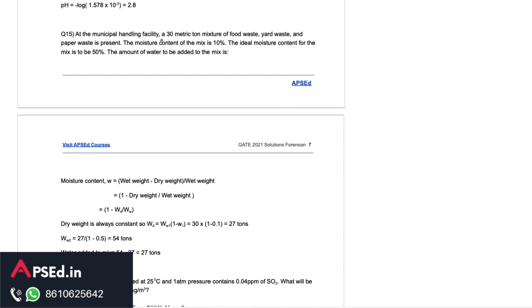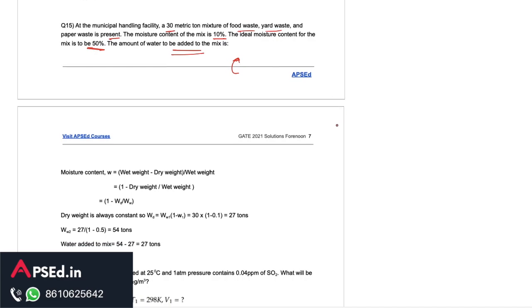Then we can see this question here. It says at a municipal handling facility a 30 metric ton mixture of food waste, yard waste and paper waste is present. The moisture content of the mix is 10 percent, the ideal moisture content is to be 50 percent. The water that should be added to this mix is, we just have to find out what is the additional amount of water moisture that we should add to this mix. Initial moisture content is 10 percent that means 90 percent would be the dry content. If we calculate the dry weight, dry weight would simply be 0.9 times 30 that is the total weight here, 30 tons. We find out the dry weight is 27 tons.